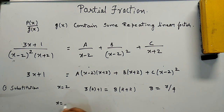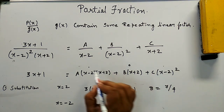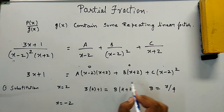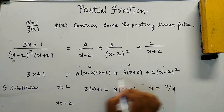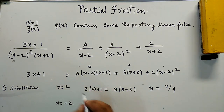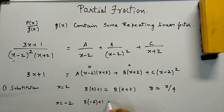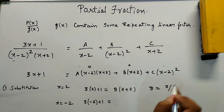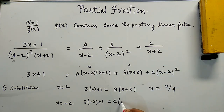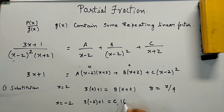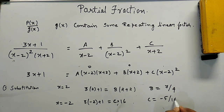Now putting x = -2, the first and second terms become zero because (-2 - 2) = 0. So we directly get C·(-2 - 2)² = 3·(-2) + 1 = -5. That gives C·16 = -5, so the value of C is -5/16.